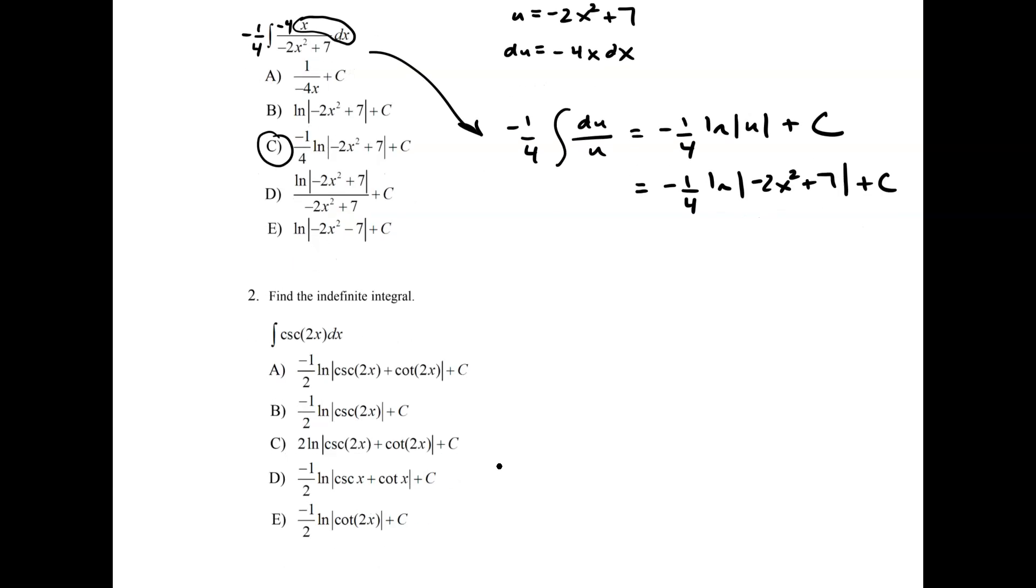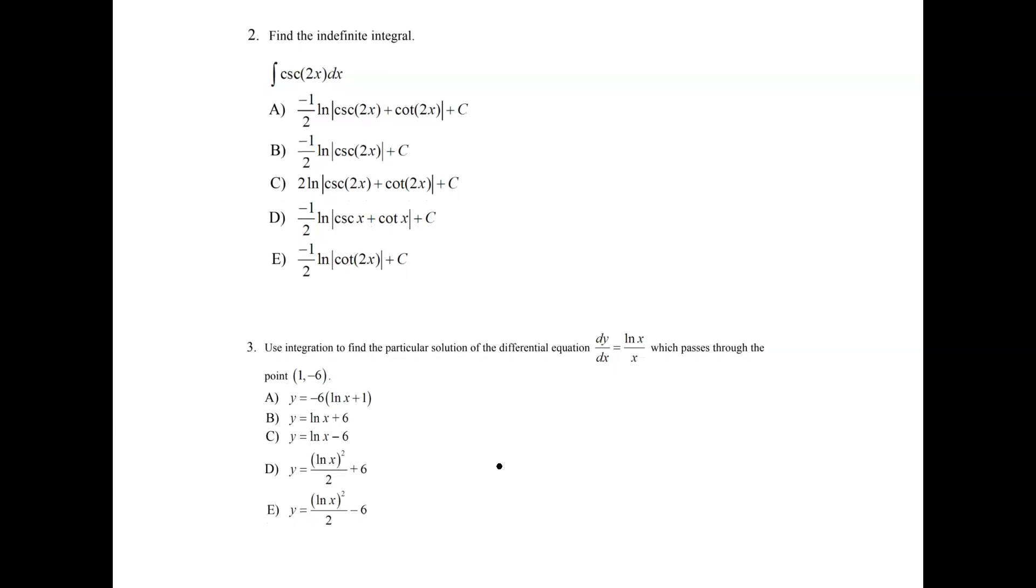Okay, number two. Let's do the indefinite integral of cosecant of 2x. Now, we are going to pretend that we know what the antiderivative of cosecant is. And we saw this in the last video that the antiderivative of cosecant was negative ln of the absolute value of cosecant of x plus cotangent of x plus c. So the substitution that I'm going to do is going to involve the 2x.